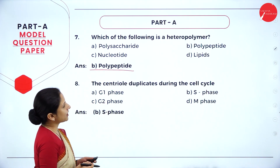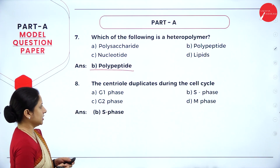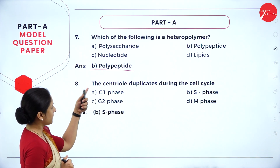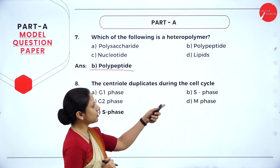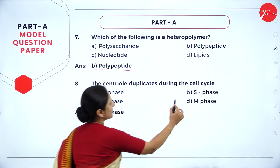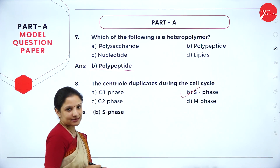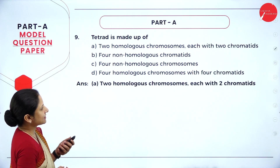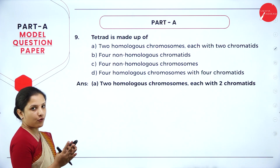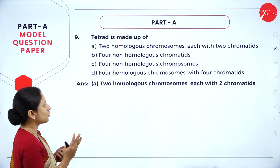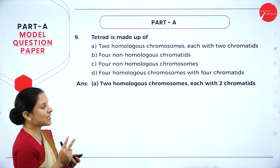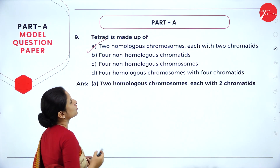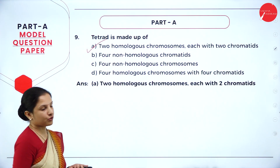Question 8: the centriole duplicates during which phase of the cell cycle — G1, G2, S, or M phase? The centriole duplicates during the S phase. Question 9: a tetrad is made up of what? The name itself implies four, so it consists of two homologous chromosomes, each with two chromatids. Option A is the right answer.